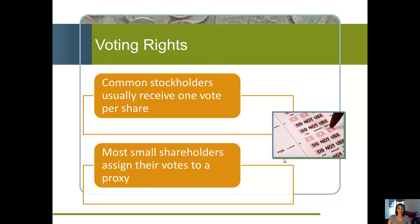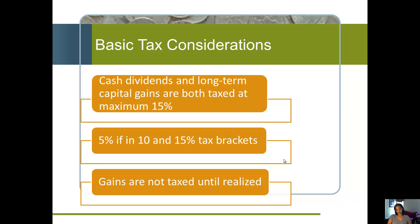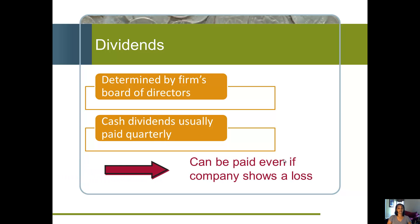Another key aspect of stock is voting rights. Common shareholders usually get one vote for every share they own. If you only own a couple of shares, you'll typically give someone else the right to vote on your behalf — voting rights are most important to large shareholders. From a tax standpoint, cash dividends and long-term capital gains are both taxed at 15%, or about 5% if you're in a lower tax bracket. Capital gains are not taxed until they're realized, meaning you have to sell the stock first.